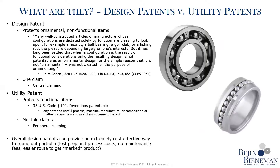Moving on to comparing design patents to utility patents. Design patents protect ornamental features — the look and aesthetics of the product. Utility patents protect functional items: the actual structure or the method of using a product that is new and non-obvious. Another big difference is that design patents are limited to a single claim and have more of a central claiming system, where you're comparing the claim itself to the alleged infringing article. Whereas utility patents have a specific peripheral claiming mechanism — if you don't meet every single element of the claim, then you're not infringing.